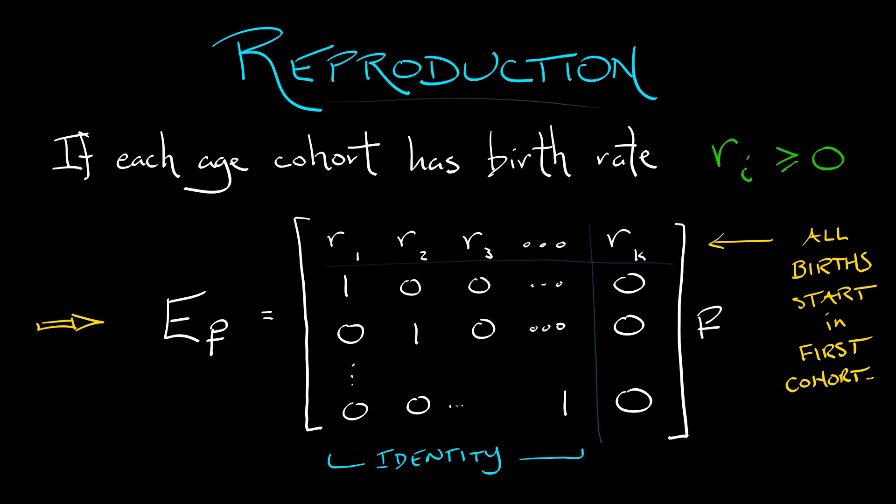Now, in practice, not all of these R sub i's might be strictly positive. You typically have reproduction happening along certain age cohorts. This is probably going to be a unimodal function. Starts off really low, gets higher, and then goes down. Now, this is not a bad model for population dynamics, but I think we could do better if we incorporated some survival into this model.